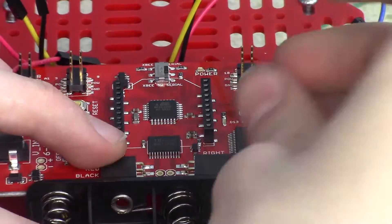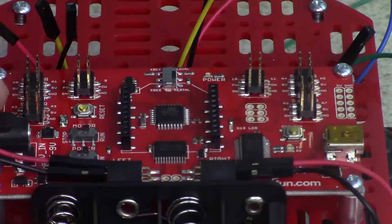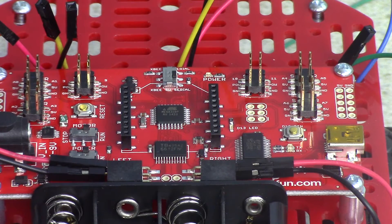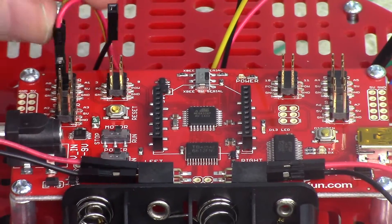So the red and black wires coming from the left motor go in the pins labeled red and black under the words left motor. I'll let you figure out which wire goes in which slot. Same thing with the right motor except with the word right.